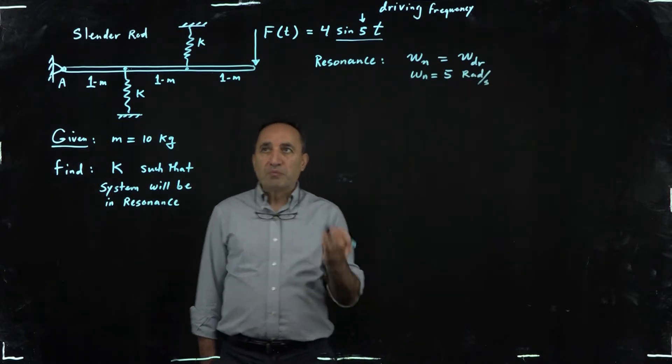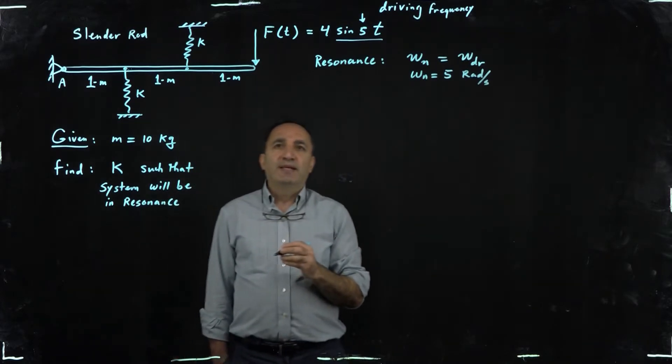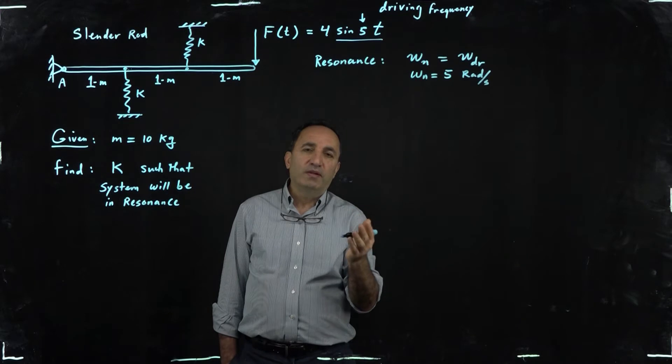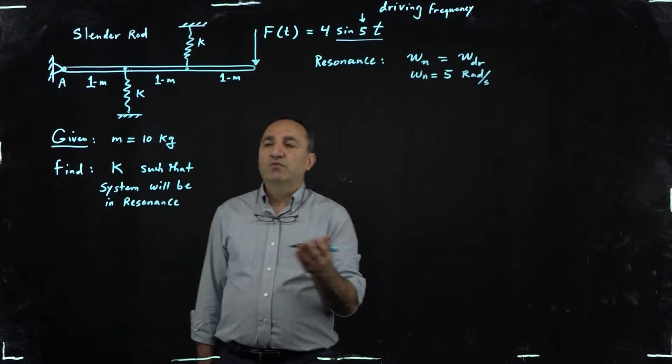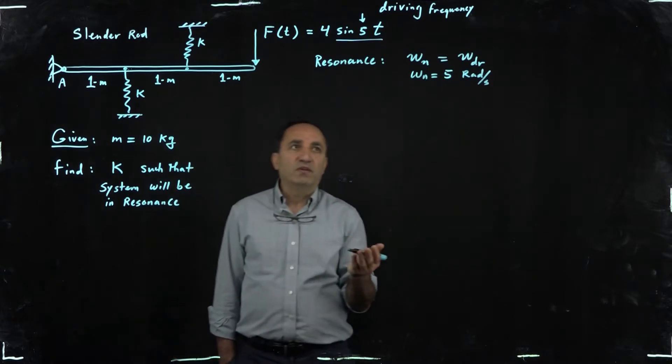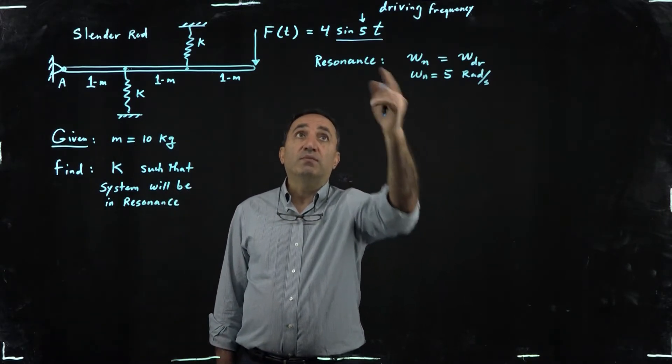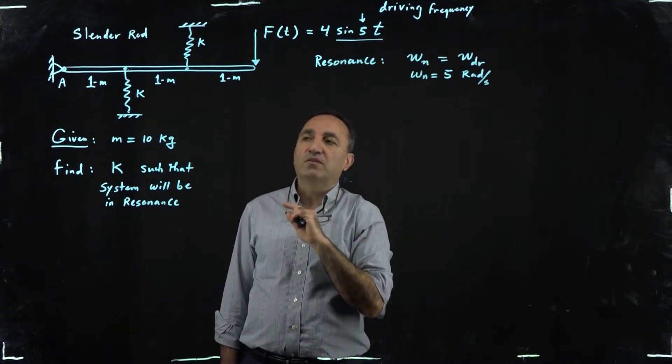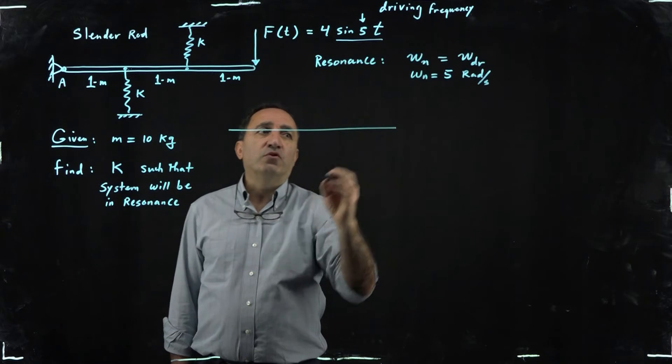So in this case we want our frequency to be this five radians per second. So this is really a simple problem. What we have to do is to get the differential equation of the system and as a result get what we call equivalent mass and equivalent spring, and then once we have those we can figure out the natural frequency very easily and we know that natural frequency has to be equal to five because it has to be exactly the same as the driving frequency. So let me go ahead and draw a free body diagram for you.